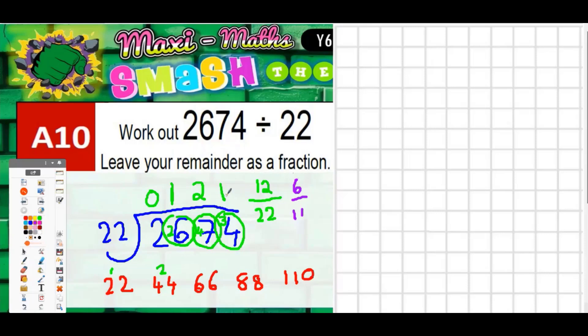Now that's actually worked out not too bad using a short method, but as I say if the numbers were different we could have run into quite a few problems here. So we are going to look at the chunky method as well. If we're looking at the chunky method we'll write 22 into 2674 again and we'll work out what chunks of 22 are.